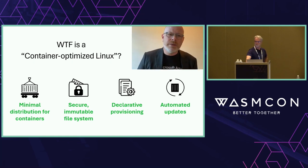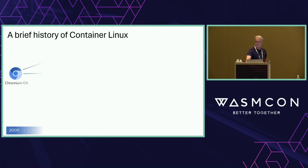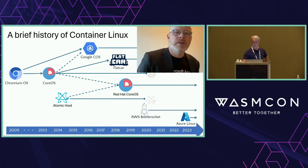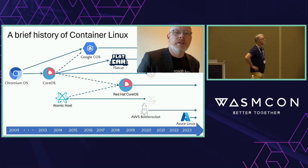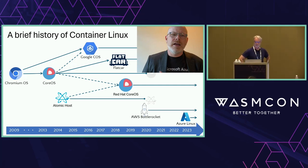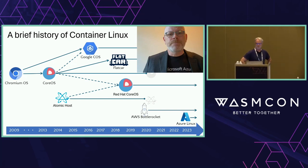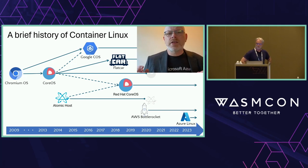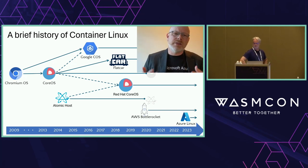This model quickly emerged as the best practice for running containers at scale, so much so that pretty much every Linux vendor and every major cloud provider ended up building a distro like this. Red Hat liked the model so much it bought the company, acquiring CoreOS in 2018, merged it with its Atomic Host project to create Red Hat CoreOS. Google created its own container-optimized OS for GKE, Amazon did the same for EKS with Bottle Rocket, and at Microsoft we now have Azure Linux, generally available for EKS as well. The key point is that this model has really gotten traction.